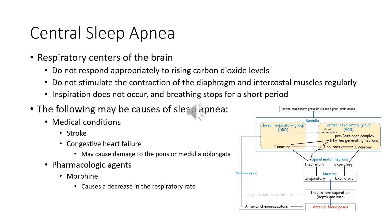Stroke and congestive heart failure may also contribute to central sleep apnea, as they can cause damage to the pons or medulla oblongata in the brain, which triggers our respiratory effects. Additionally, medicines that relax or suppress the respiratory centers of the brain — such as opioids like morphine — cause a decrease in respiratory rate. This is why we see many deaths with opioid addiction or overdose, because opioids suppress the breathing center in the brain.